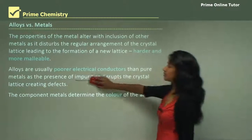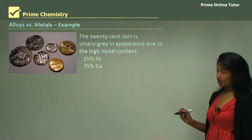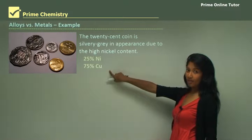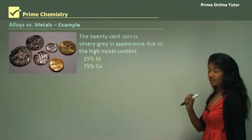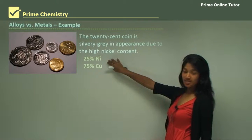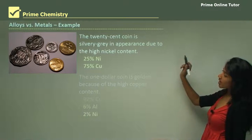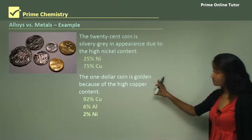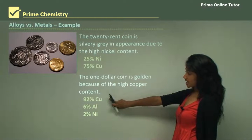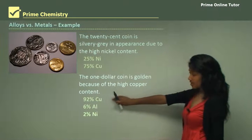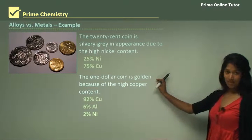Now we will be focusing more on examples of alloys. An example is the 20 cent coin — it's made out of nickel and copper, with 75% copper and 25% nickel. This is a relatively large percentage of nickel and that is why it is silvery grey in appearance. However, the one dollar coin, which is golden, is made up of copper, aluminium, and nickel. The copper content is much higher than that of the 20 cent coin, and that is the result of the golden appearance.